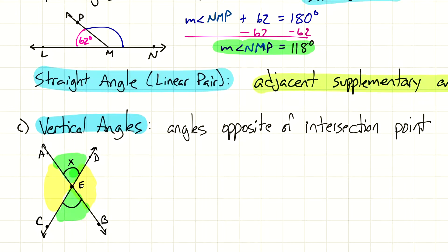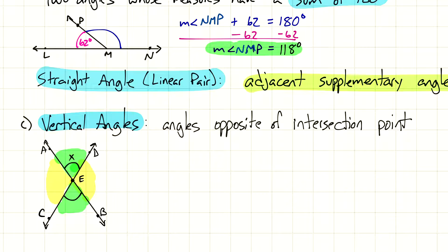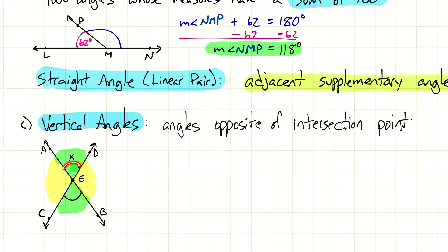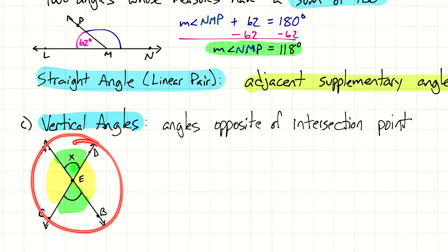Vertical angles are angles that are opposite an intersection point. When two lines intersect — kind of like a big X — we call that an intersection point. The angles opposite each other are vertical angles. I've highlighted in green one pair and in yellow another pair, so we actually have two pairs of vertical angles. Anytime you see intersecting lines, right away you should recognize vertical angles.